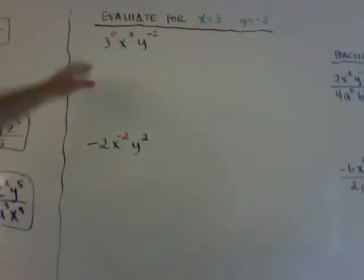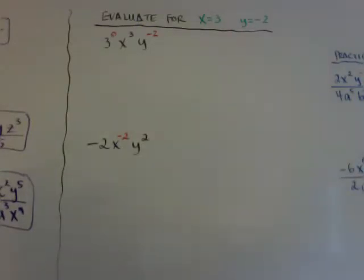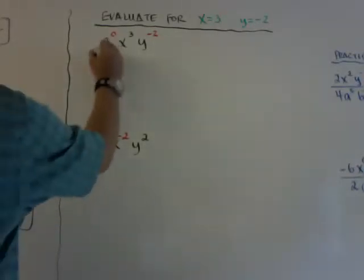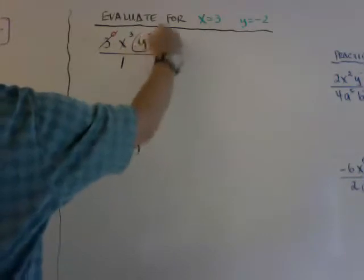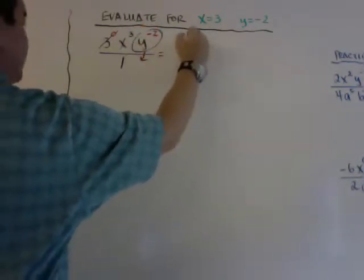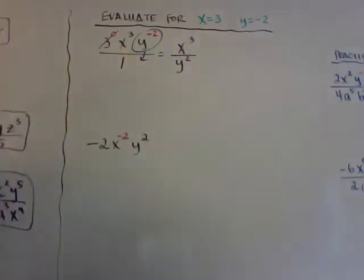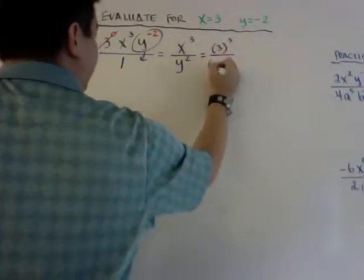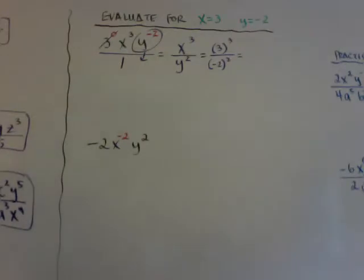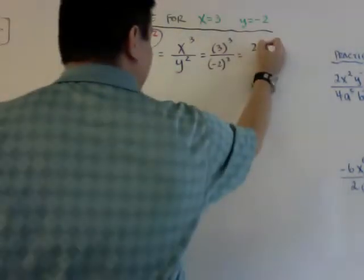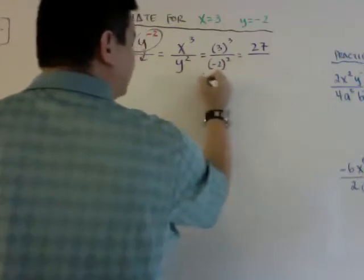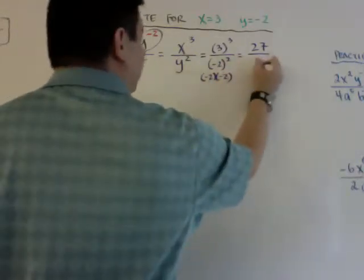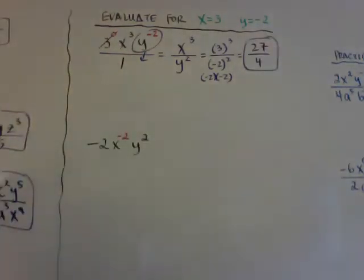Now, evaluating. If x equals 3 and y equals negative 2, the first rule of thumb: always use parentheses when you substitute. If I simplify first — put this over 1 — the zero exponent is gone and the negative exponent moves down. I'm left with x cubed over y squared. Now I substitute: 3 cubed over negative 2 squared. 3 cubed is 27, and negative 2 in parentheses squared is negative 2 times negative 2, which equals 4. The answer is 27 over 4.